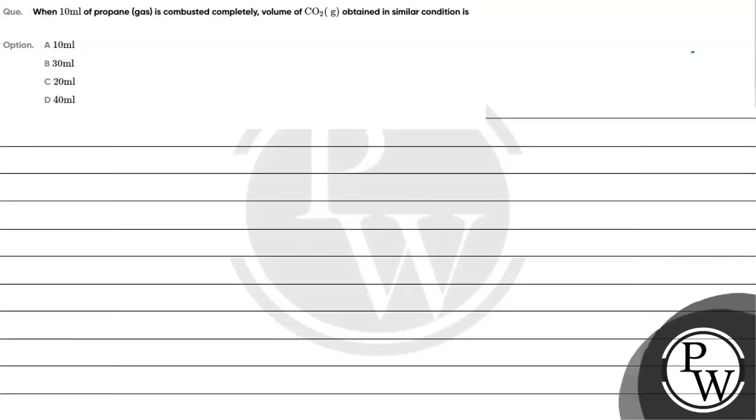Let's read this question. The question says when 10 ml of propane is combusted completely, volume of carbon dioxide obtained in similar condition is: option A 10 ml, option B 30 ml, option C 20 ml, option D 40 ml.